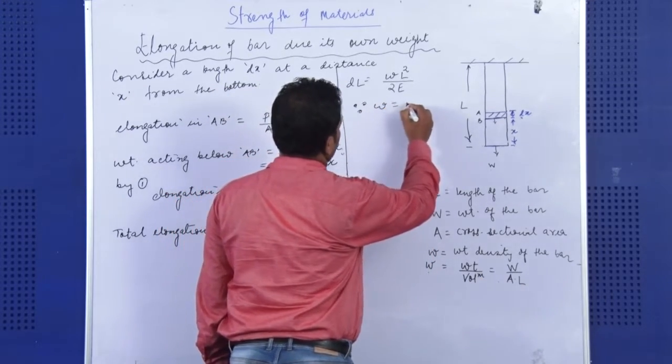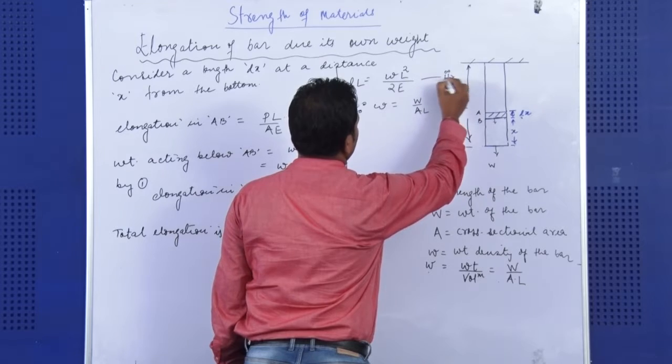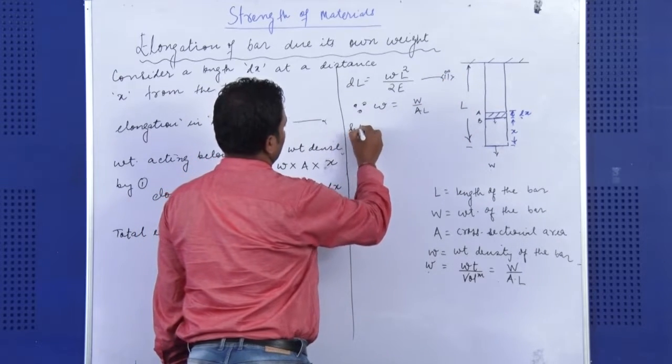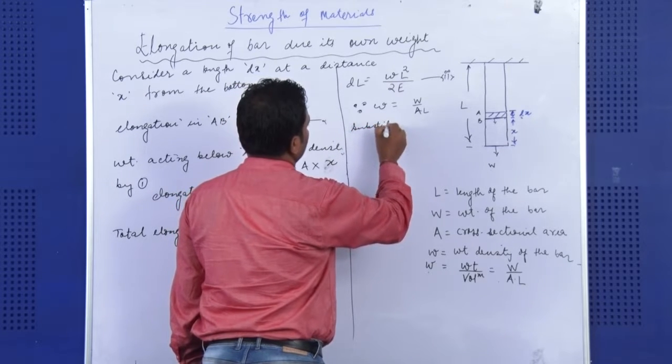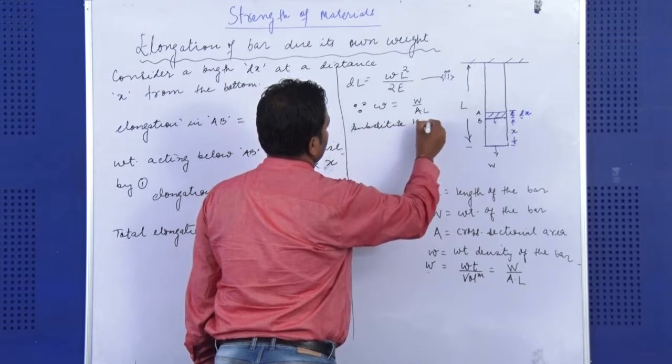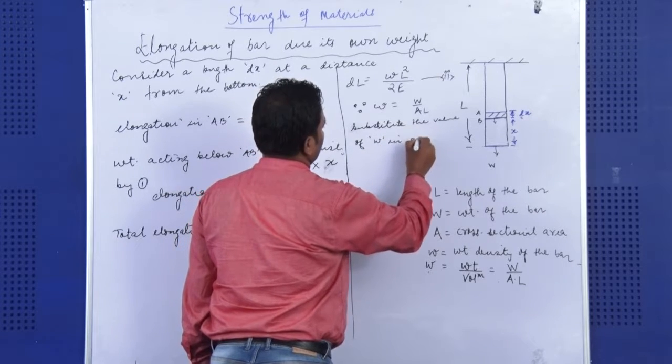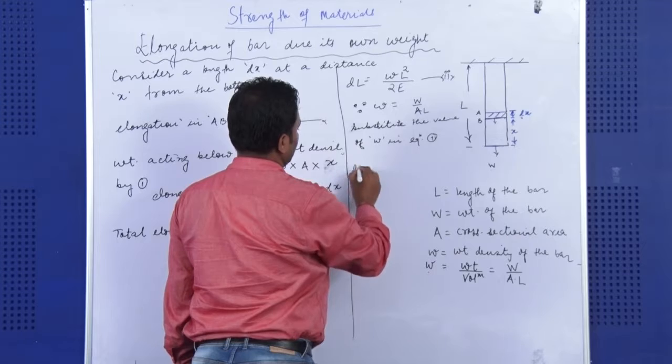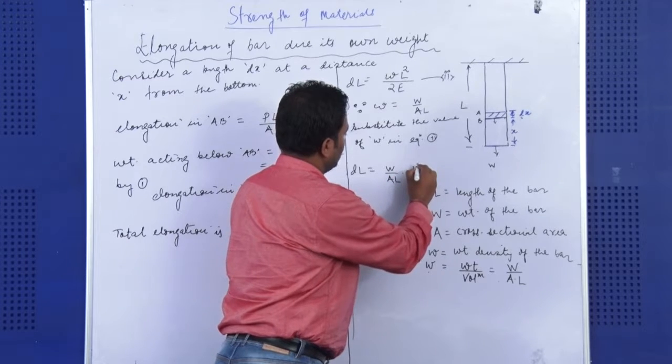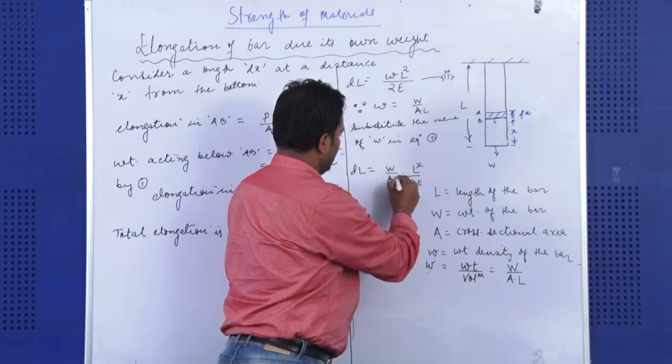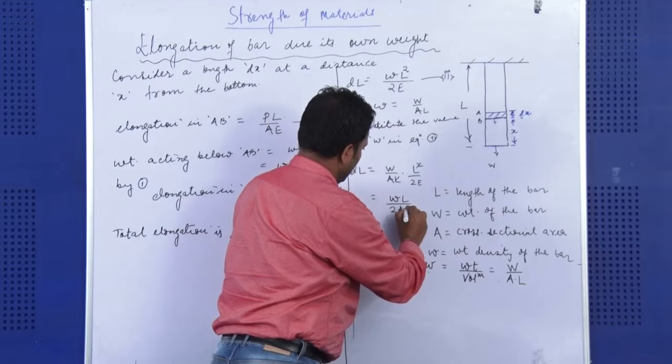Since this was equation 2, I will substitute the value of w in equation 2. Upon substitution, what we may obtain, we can obtain W by AL into L square by 2E, L to L is cancelled, finally it is WL by 2AE.